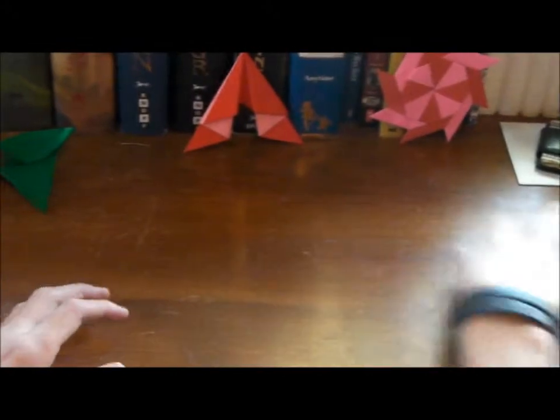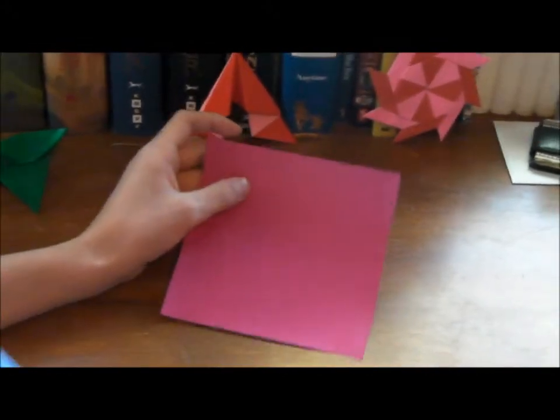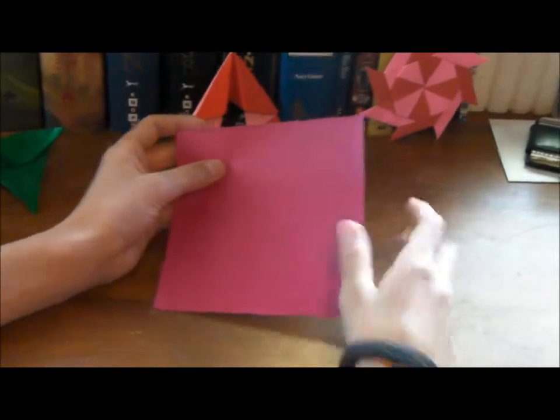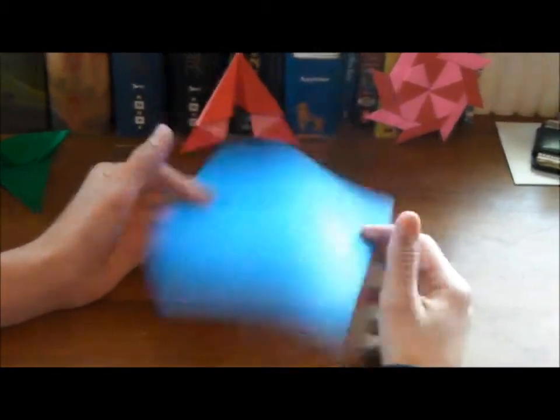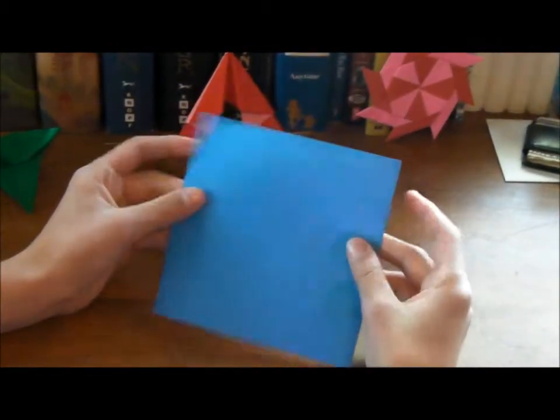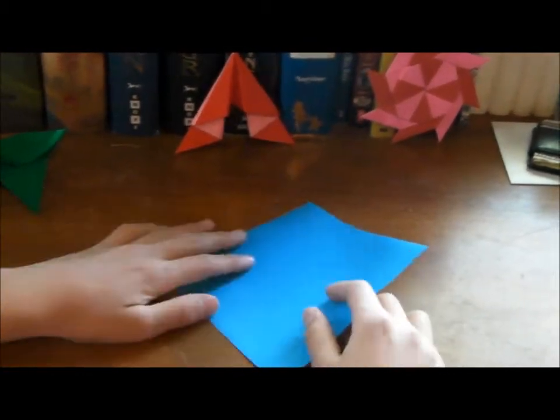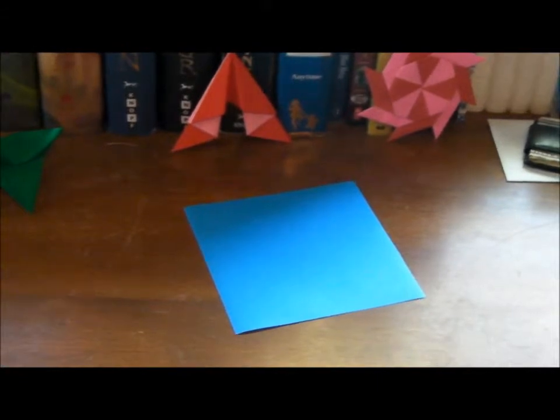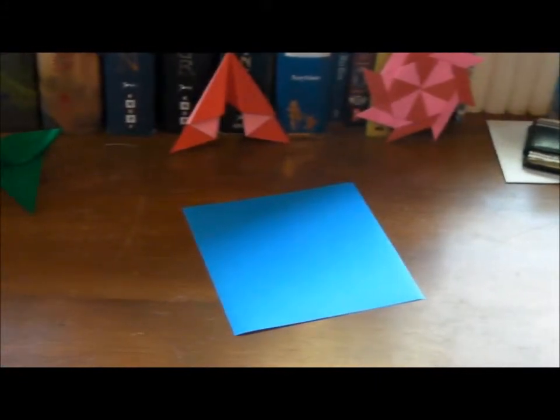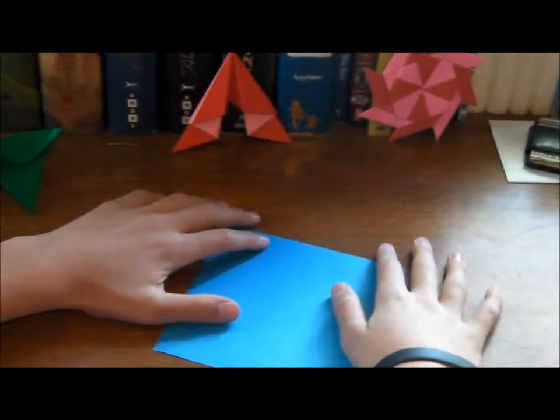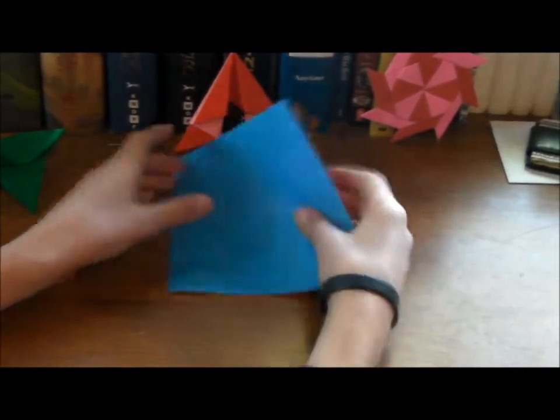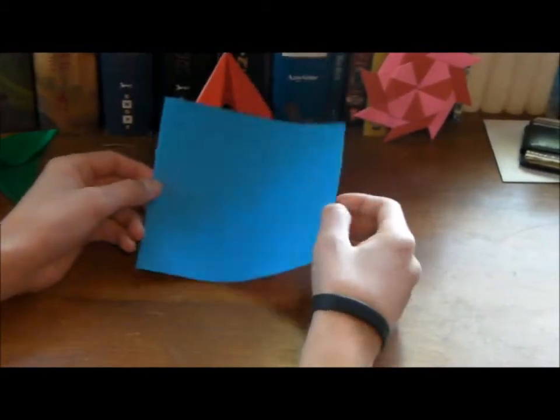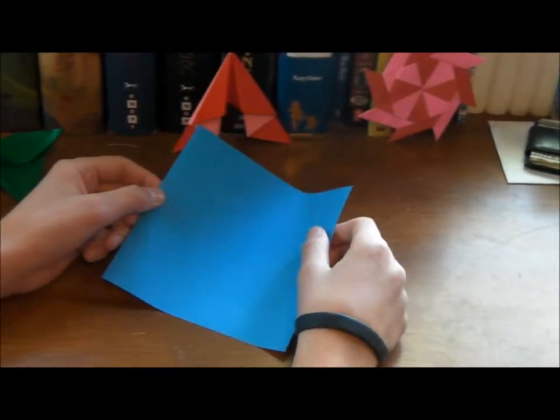So here it goes. Alright everybody. You can see I'm using double colored origami paper from Amazon.com. You do not know how many times I've had to redo this video. I have like 10 crabs. Anyway, so I'm using this paper from Amazon.com.